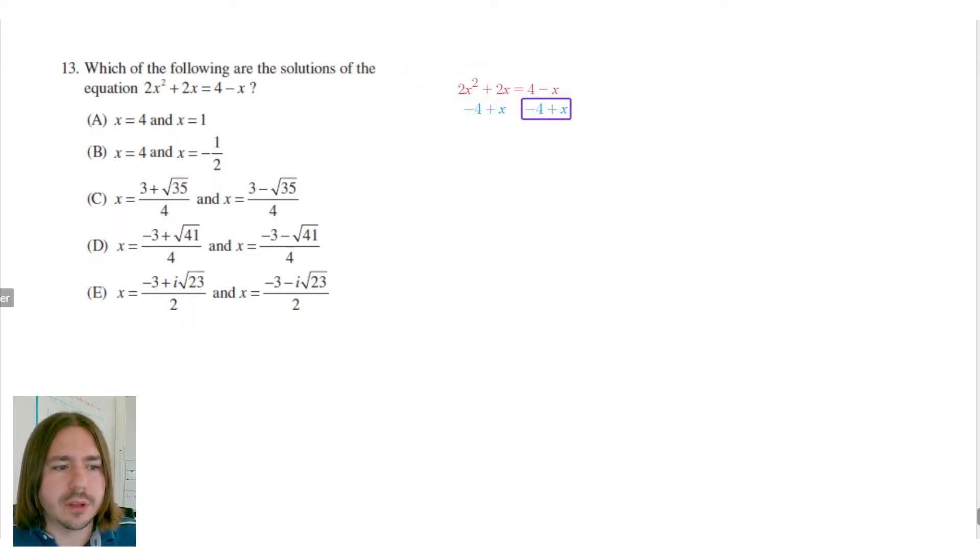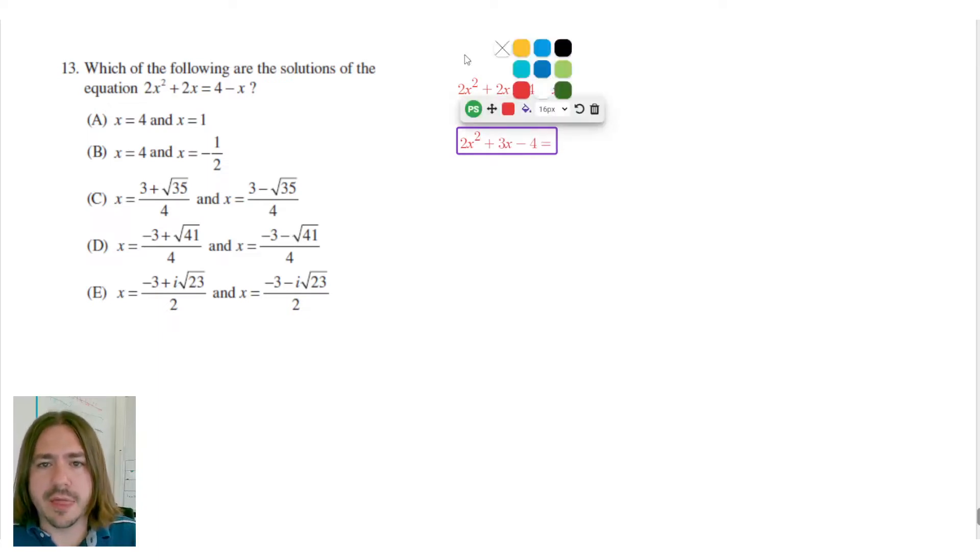So once you do that, you'll get 2x squared and then I've got 2x plus x would be 3x and then minus 4. There's no constant there to combine with the negative 4, so that just stays by itself. And then everything on the right hand side should cancel out. 4 minus 4, x minus x, all that should be zero and that's what we wanted to happen.